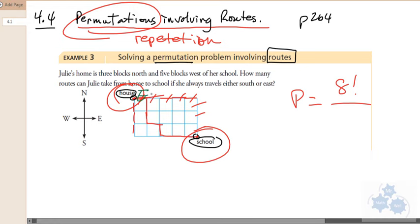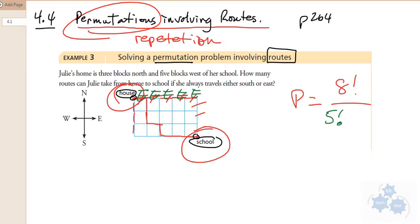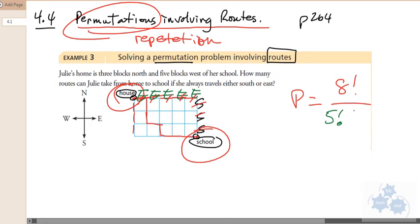So there are five factorial. Five of those eight repeat. And then the other three also repeat. So south, south, and south. Three factorial. Now, there are some assumptions here before we get to the final answer.